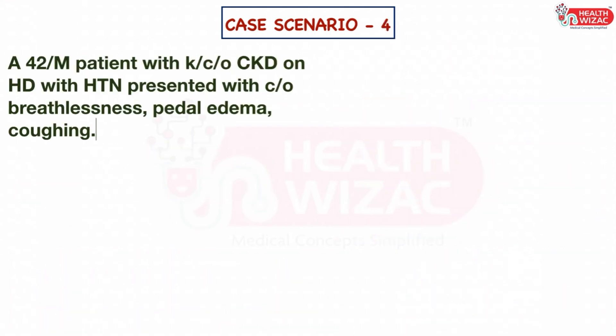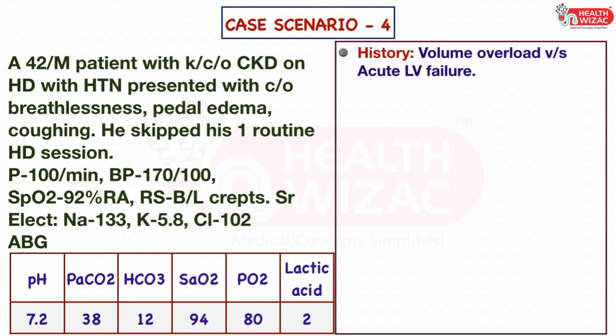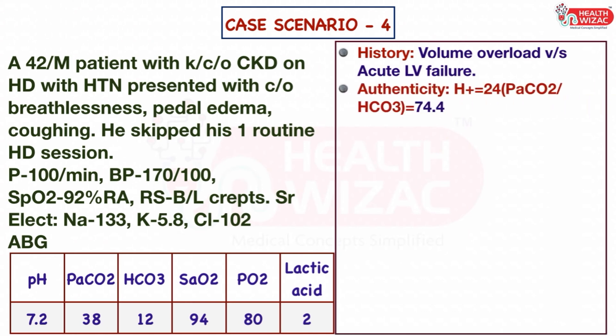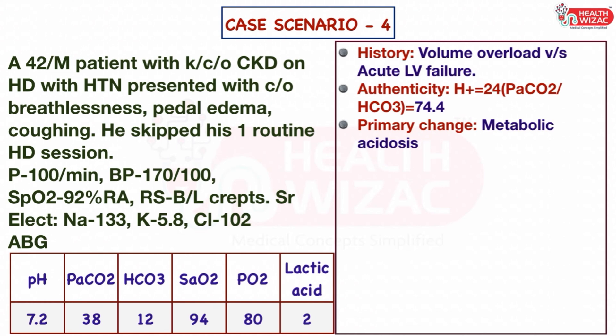Case Scenario 4: A 42-year-old male with known chronic kidney disease on hemodialysis and hypertension presented with breathlessness, pedal edema, and coughing. He skipped one routine hemodialysis session. BP was 170/100. Respiratory system showed bilateral crepitations. Step 1 — history suggestive of volume overload versus acute left ventricular failure. Step 2 — calculated H+ ion is 74.4, which matches the pH range; sample is authentic. Step 3 — primary change is metabolic acidosis.